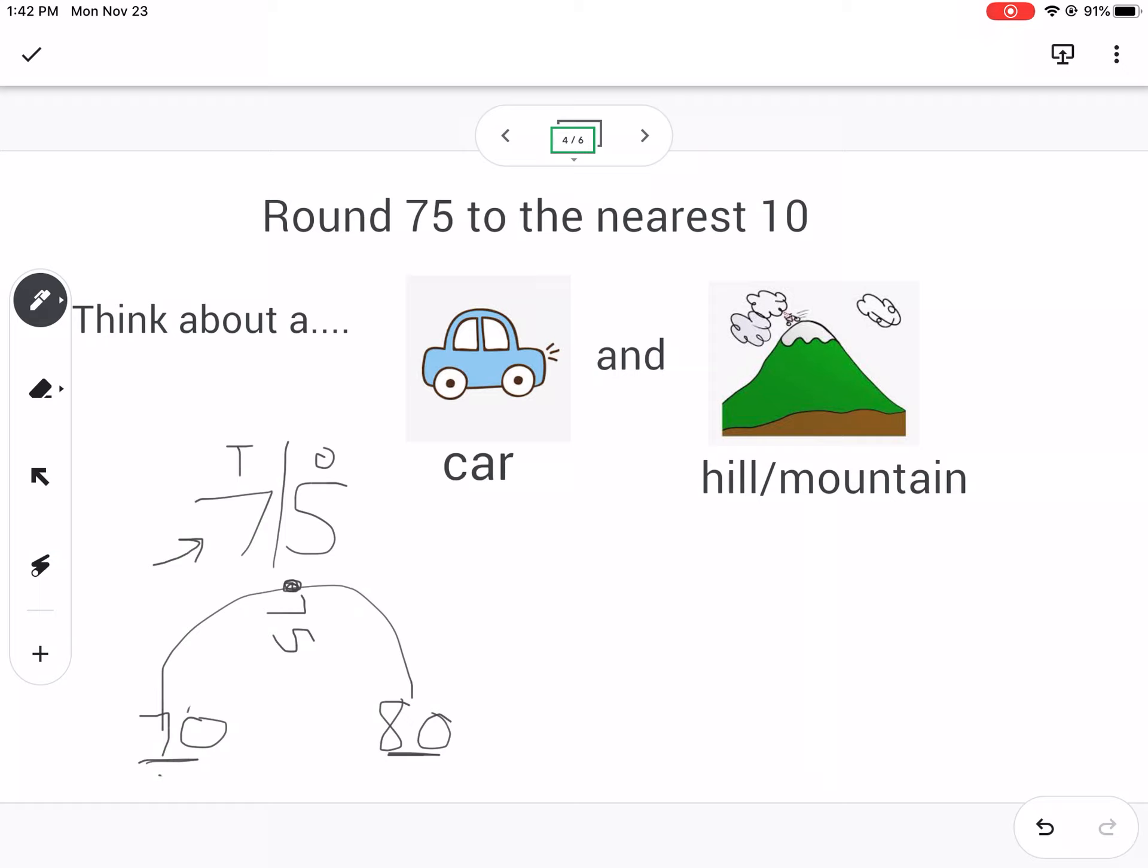The rule is that if it's smack in the middle, the car is going to roll down to the bigger number. So 75 rounds to 80. The rule is that if it's in the middle, it's going to go to the bigger number. So 75 rounds to 80.